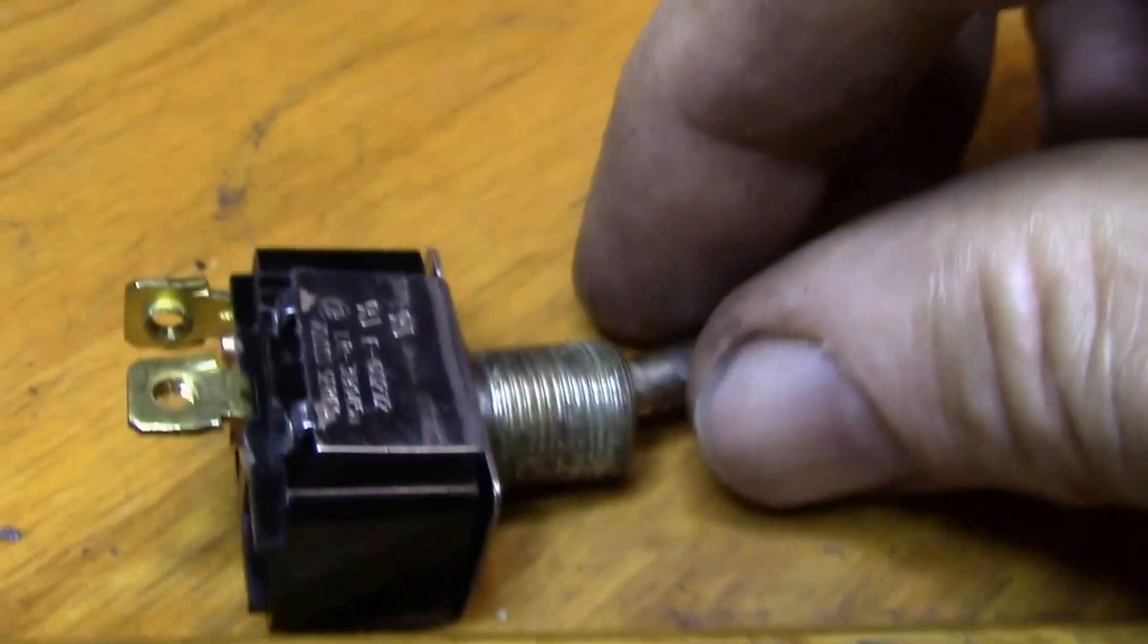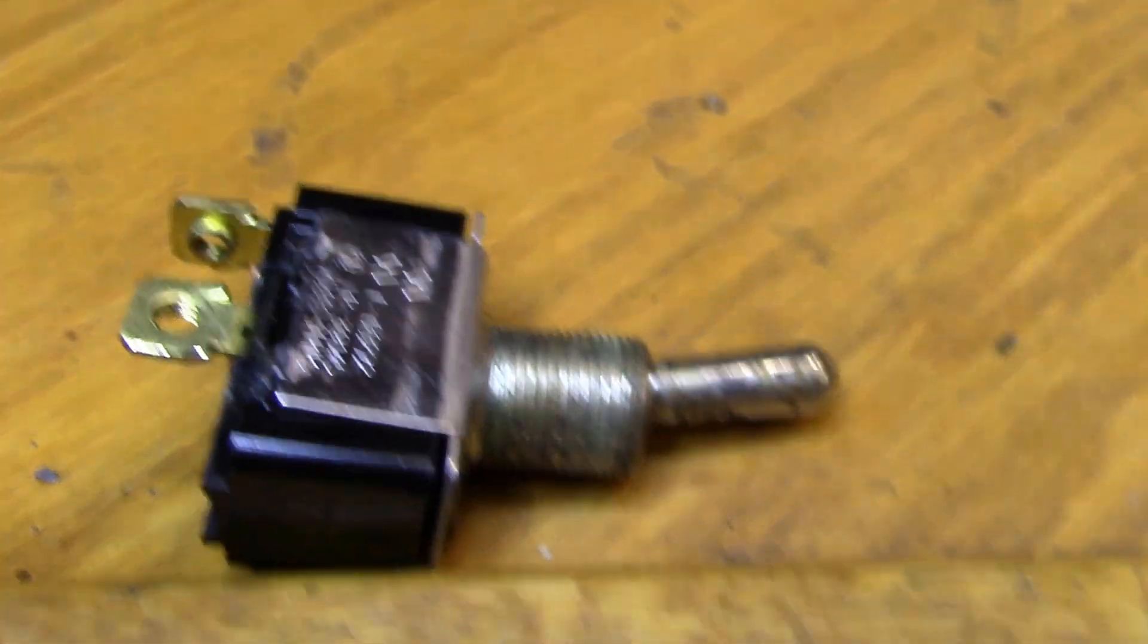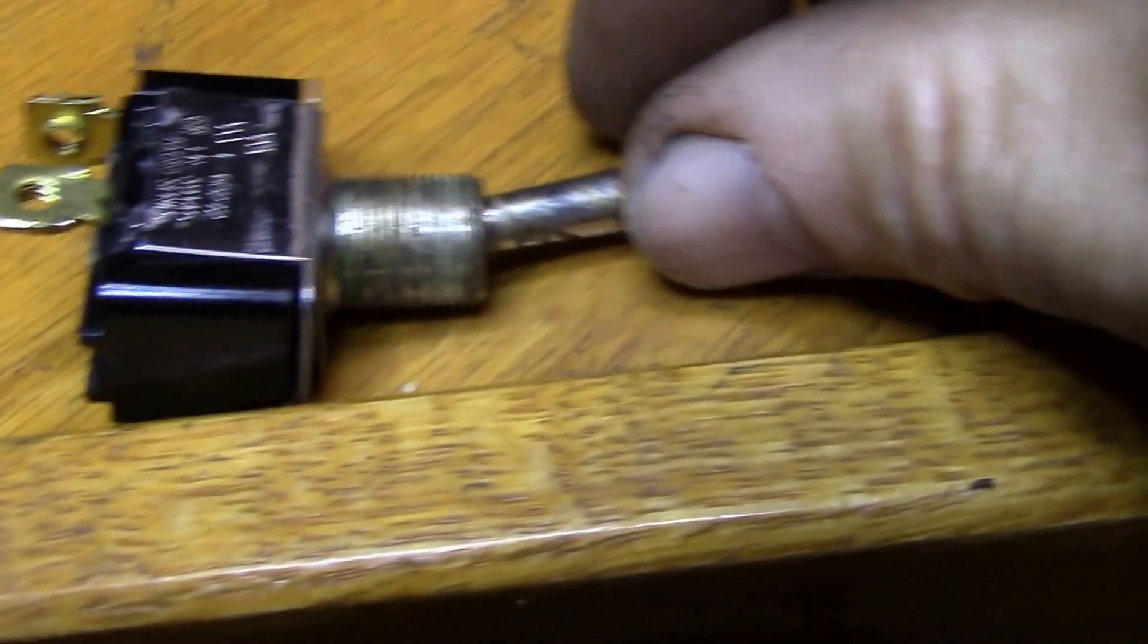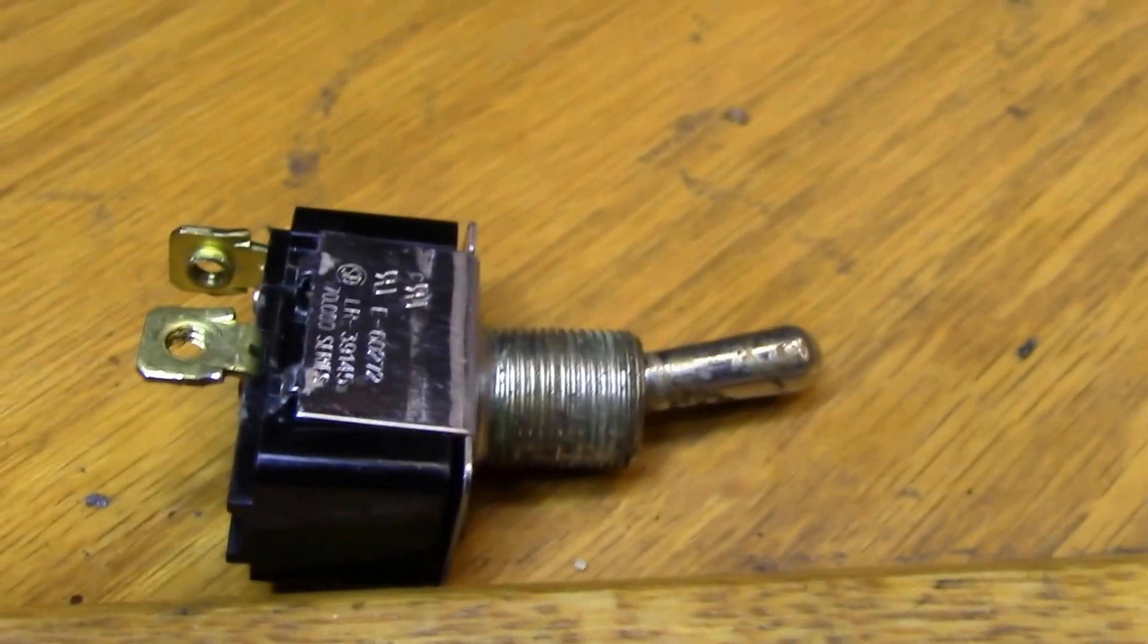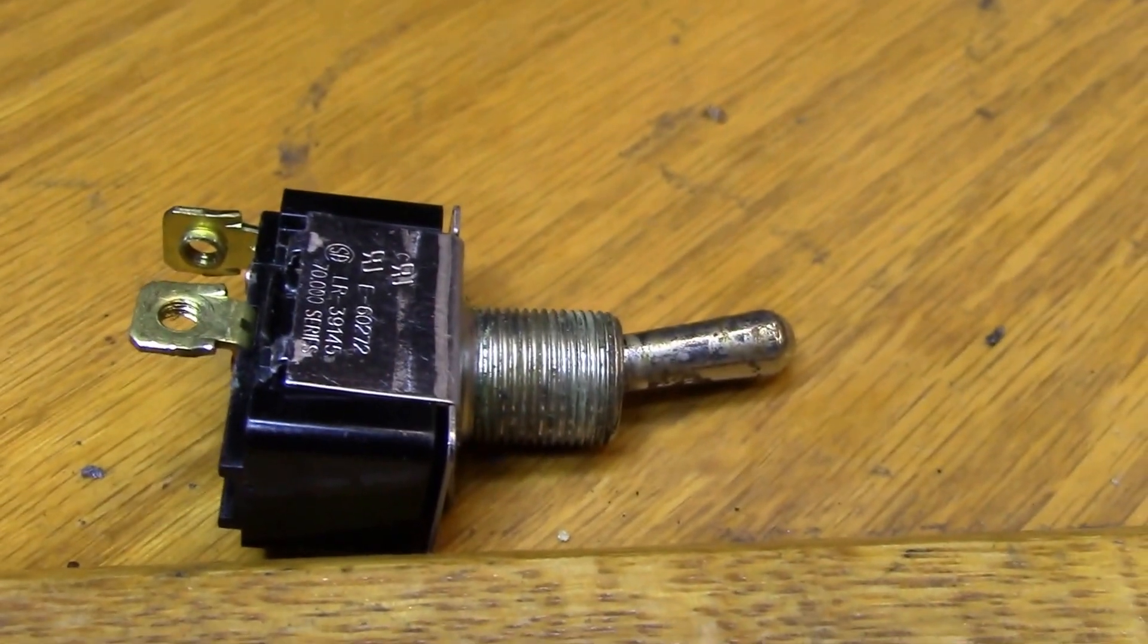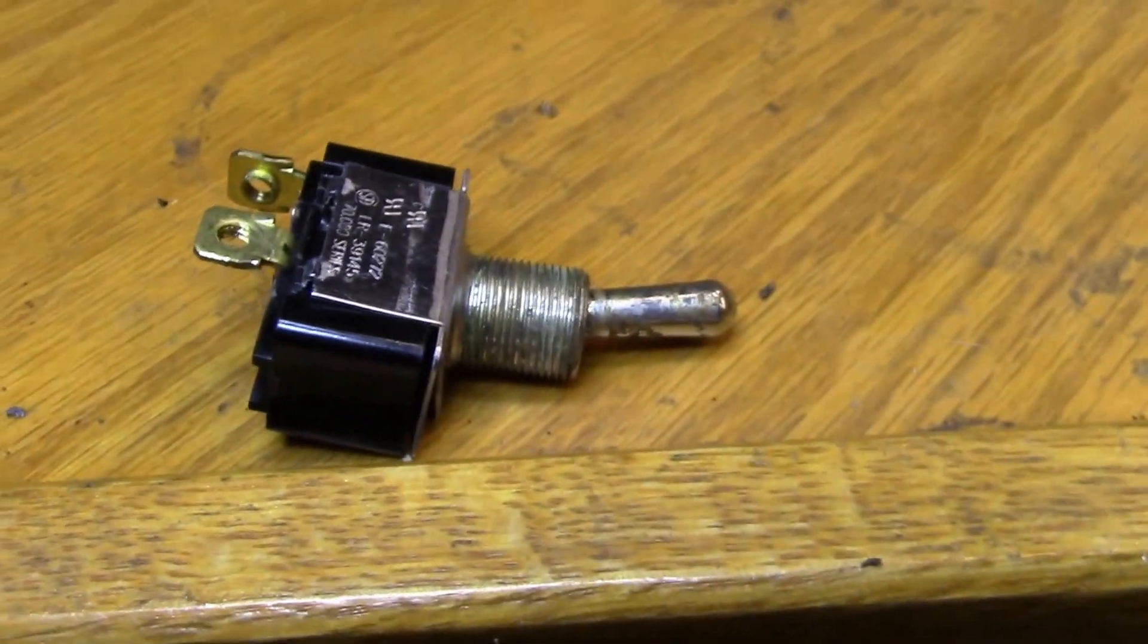Good evening YouTube. This was the switch I pulled out of my bandsaw and it seemed to have welded contacts. They were welded in the on position, so I thought I would pull it apart and see what it looks like inside.